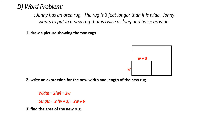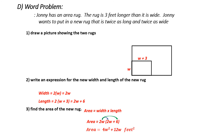Find the area of the new rug. The new rug is a rectangle, so the formula is width times length. My new width is 2w, and my new length is 2w plus 6. In order to simplify this, I need to get rid of the bracket using the distributive law. 2w times 2w gives me 4w squared. 2w multiplied by 6 gives me plus 12w. I was told the units were feet, and because it is area — meaning I am multiplying width times length — it is going to be feet squared. That's my final answer.